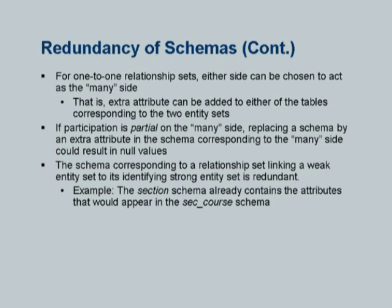What about a one-to-one relationship? It turns out that the attribute can be folded into either one. If a student-advisor relationship is one-to-one, you can store the advisor with the student or the advisee with the instructor - either one would work. So that choice is made by the designer; there is no unique way of doing it.